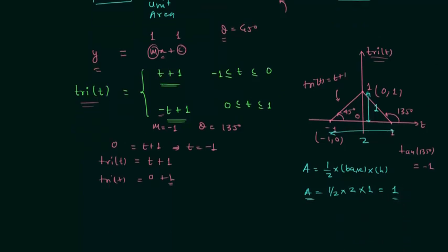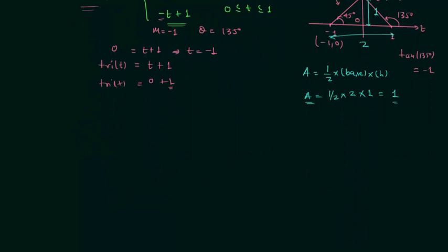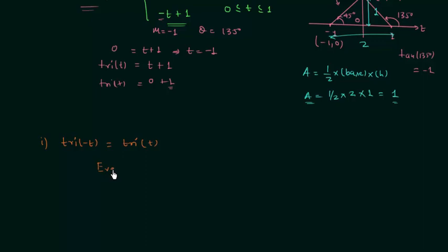Now we will discuss a few properties of the unit triangular function. In the first property we will find whether the unit triangular function is an even signal or an odd signal. For this we need to perform a time reversal. After performing the time reversal we have tri(minus t), and you will find it is the same as tri(t). This is the condition of even signals, so the unit triangular function is an even signal.